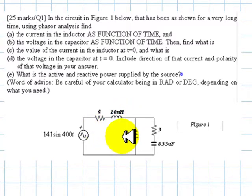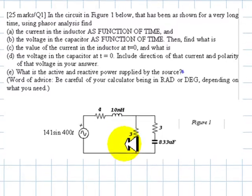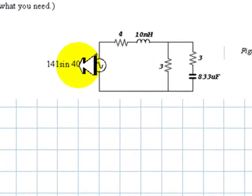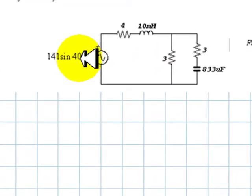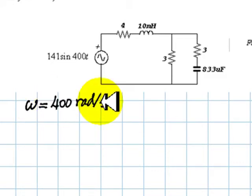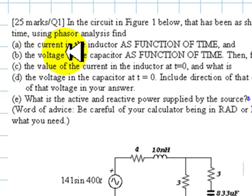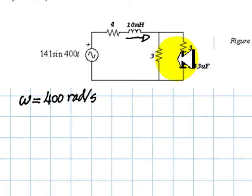To analyze this as a phasor problem, the first thing we do is identify the frequency, which is 400 radians per second. We continue reading. Find what is the current in the inductor as a function of time, the current in this inductor. Part B: find the voltage in the capacitor as a function of time, this voltage.